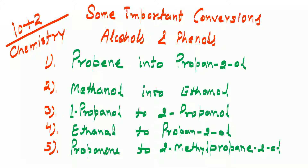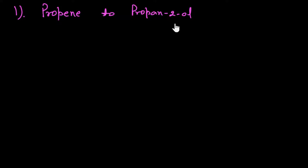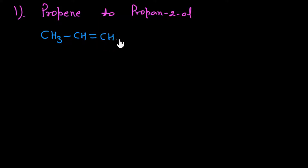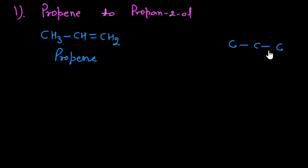Let us discuss some important conversions from alcohols and phenols — 10+2 chemistry. The first one is propane into propane-2-ol. First of all, we have to write the structures of both propane and propane-2-ol. Here it is: propane is CH₃–CH=CH₂.